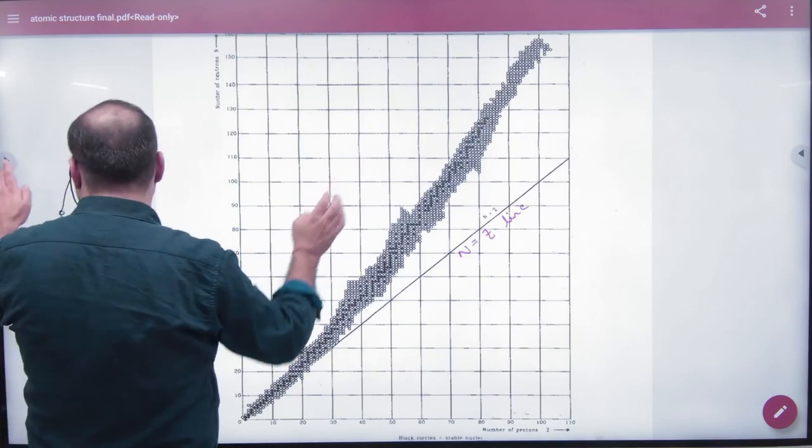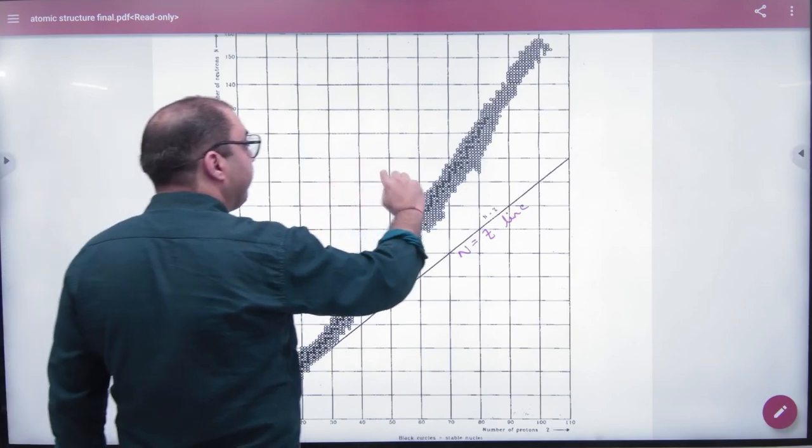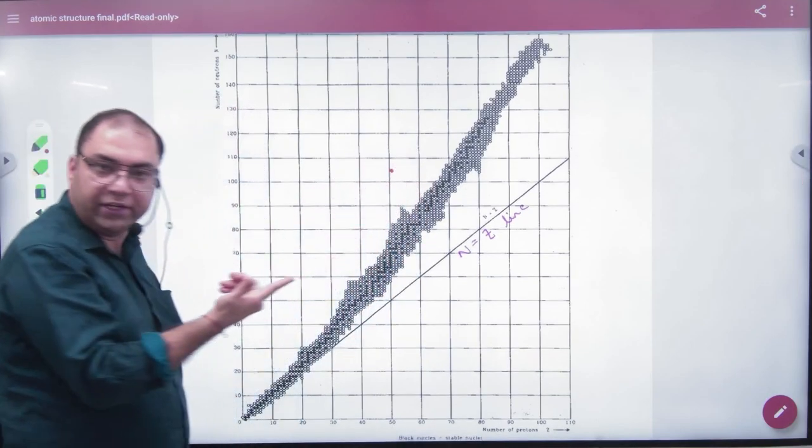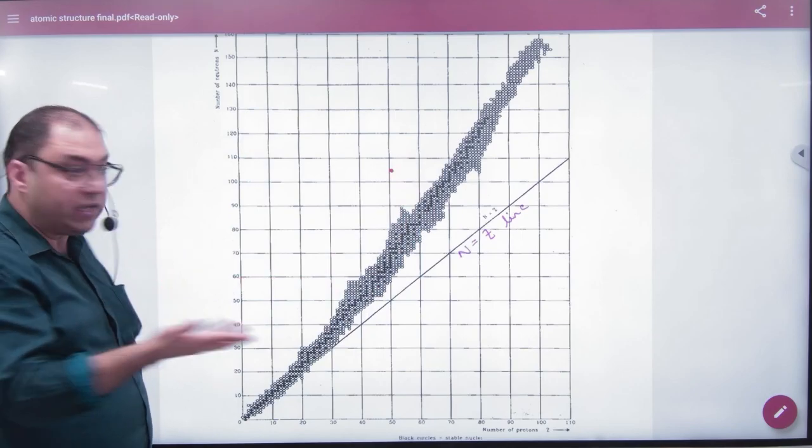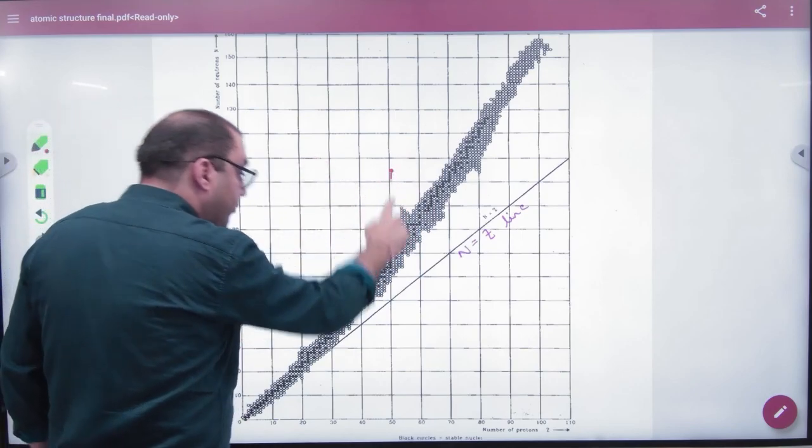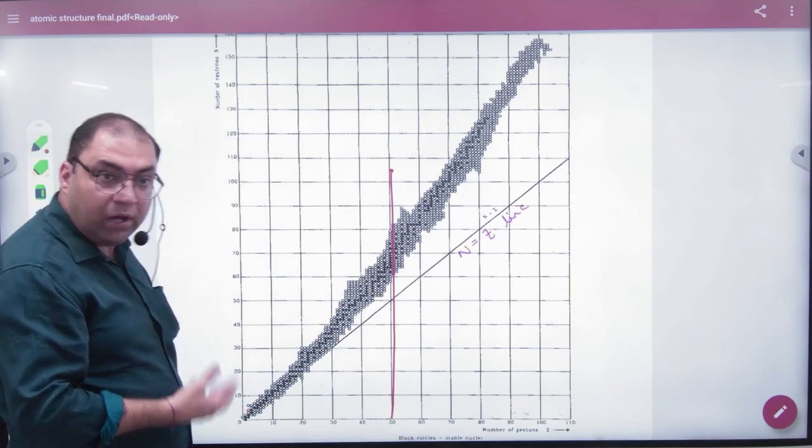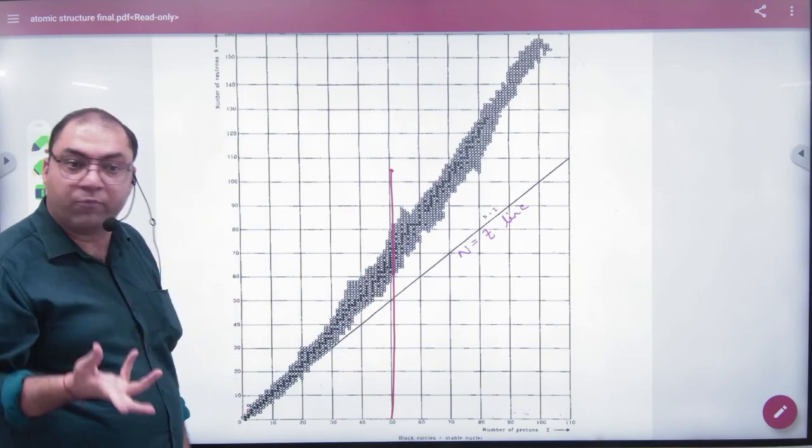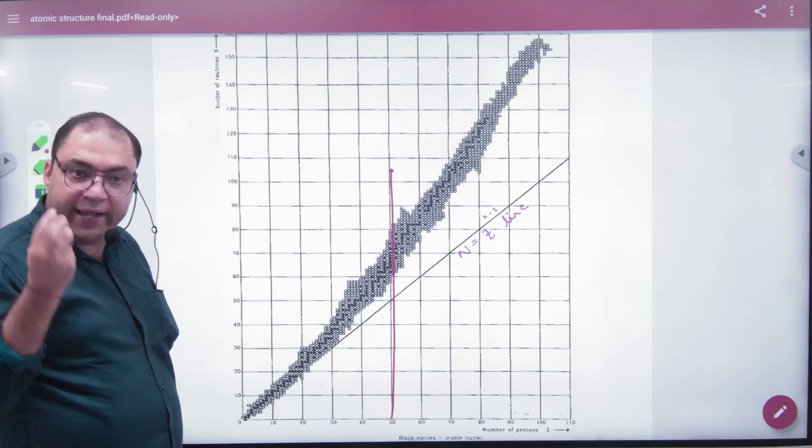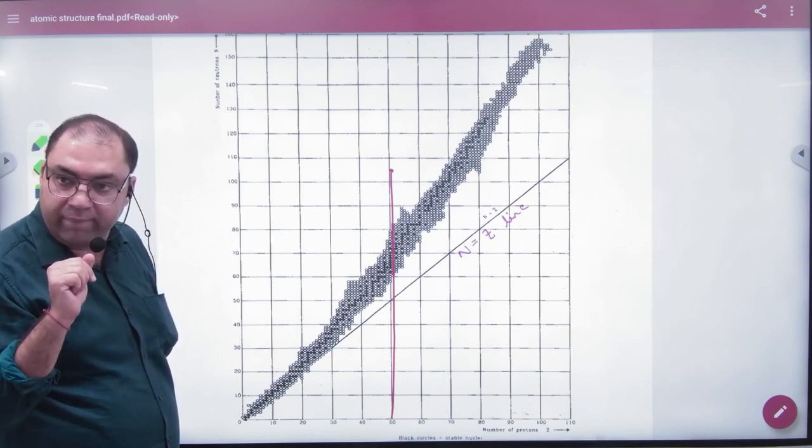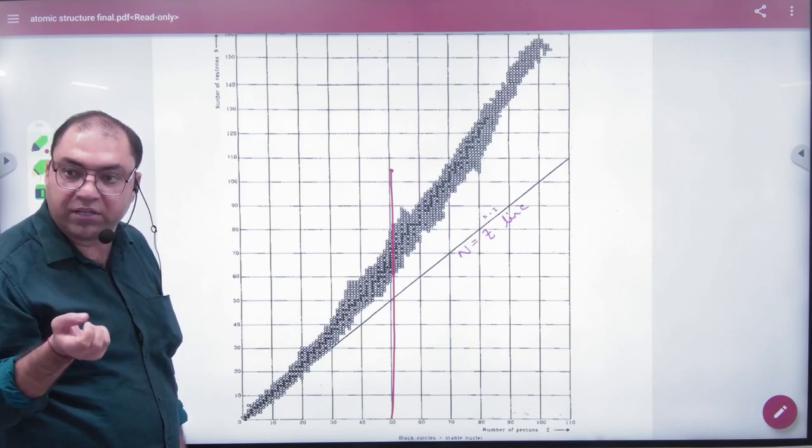And if the graph—where is it? It is here. So if N and Z is here, then N is very big, more than Z. Now if the nucleus has too many neutrons, then the nucleus becomes unstable.